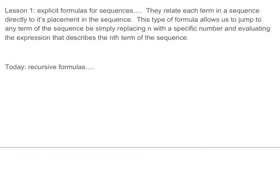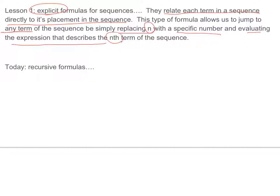In Lesson 1, we did explicit formulas for sequences, which relate each term in a sequence directly to its placement in the sequence. We don't necessarily have to know what was prior to each term. We can jump directly to the term in the sequence. This formula allows us to jump to any term by simply replacing n with a specific number and evaluating the expression.